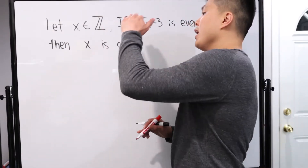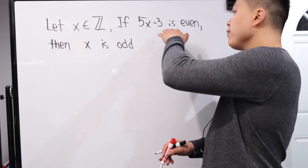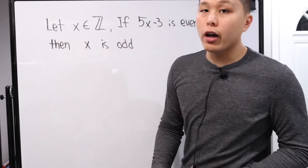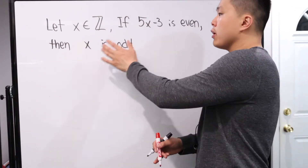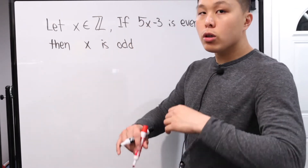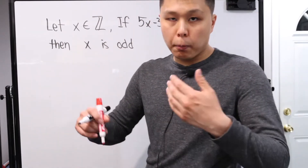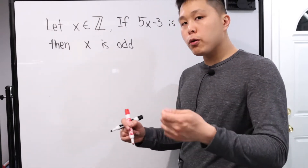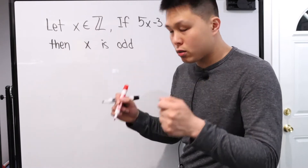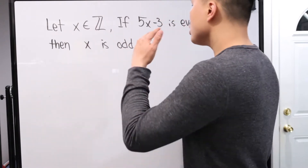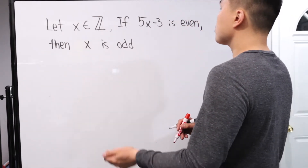Let's look at this first problem: let X be an element of the integers. If 5X minus 3 is even, then X is odd. Now, you can actually go and directly prove that — there's no issue with that. The point with different proof techniques is that certain approaches save you a lot more time than always bulldozing with direct proof. This one may not save as much time, but it's actually pretty cool.